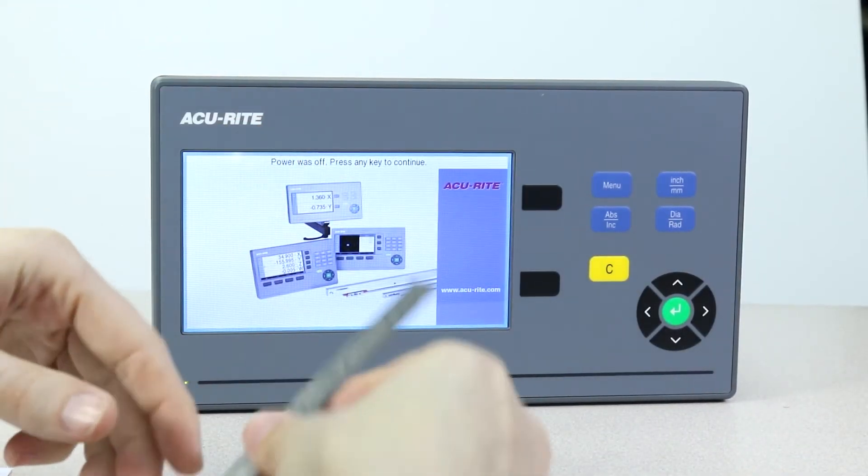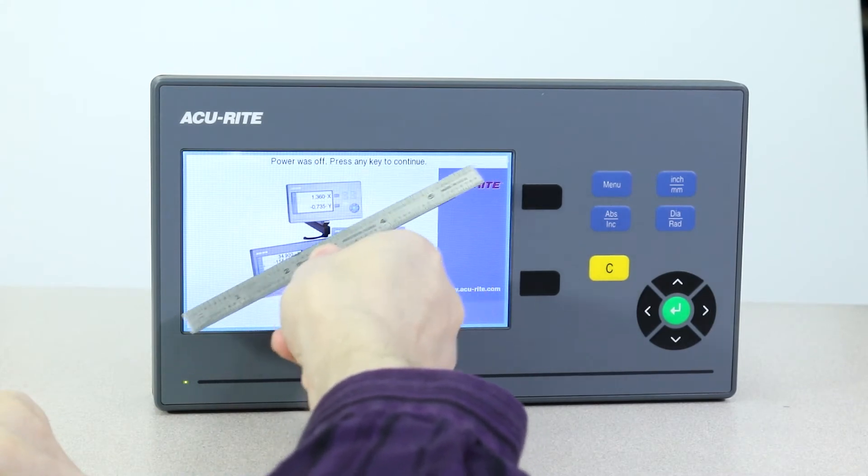We've got a pretty generous 7 inch display that measures diagonally corner to corner.